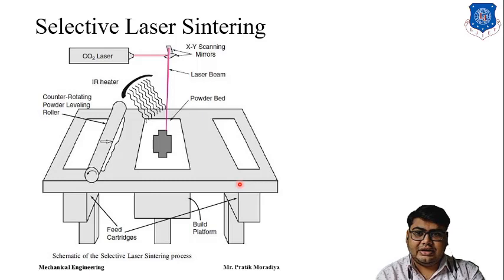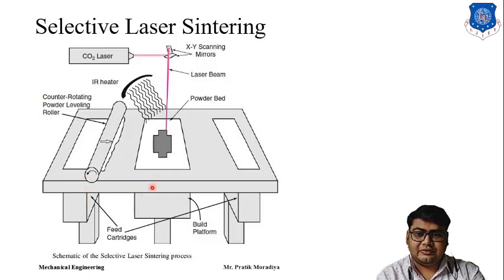Looking at the diagram of the process, there is a roller and a powder-containing cartridge known as the feed cartridge, and this is the build platform. As the process progresses, the feed cartridge moves upward and the build platform moves downward, because the part is being built layer by layer. The extra powder is transferred to the build platform using the roller, where the laser light is applied.